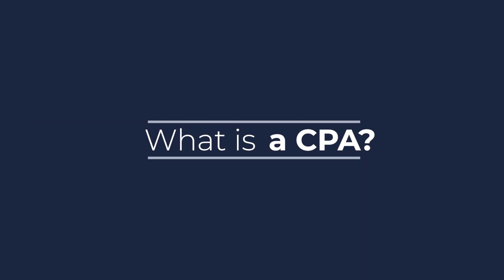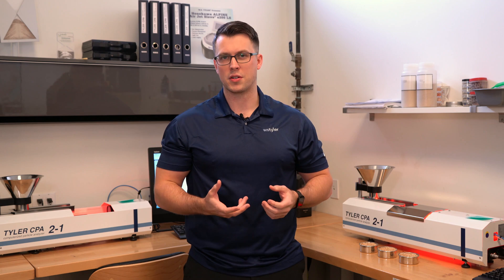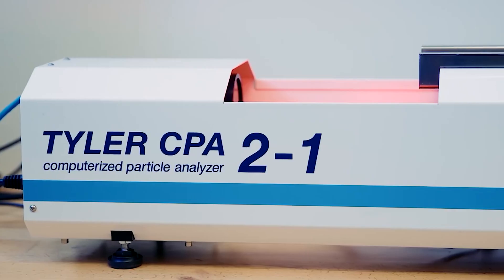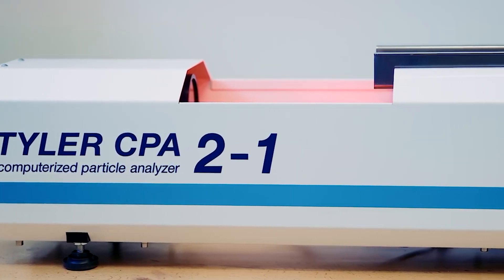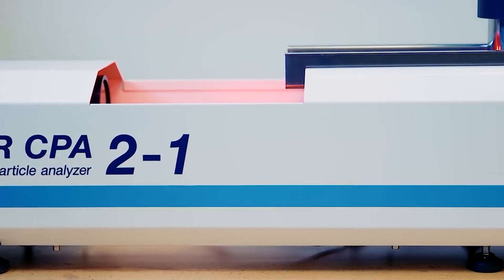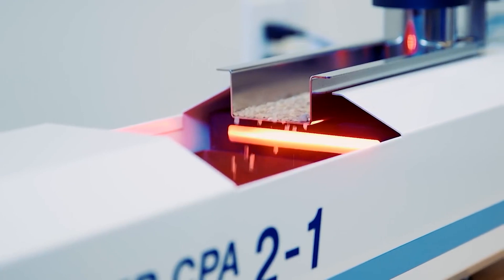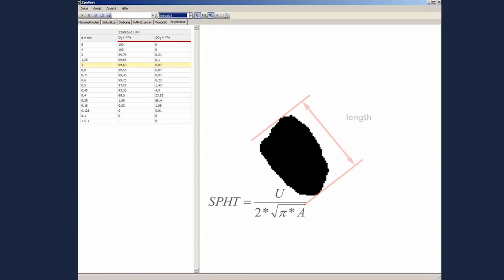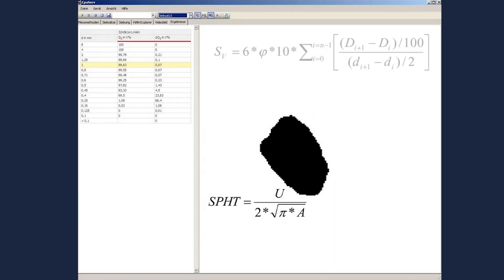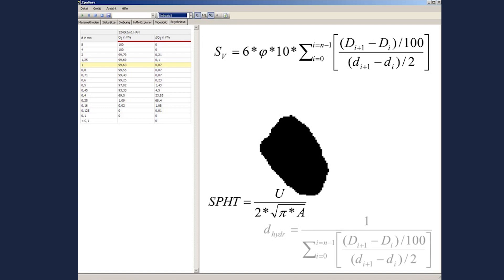What is a CPA? A CPA is an alternative to traditional test sieving. It's a photo-optical image analyzer that utilizes a line-scan camera and an LED backlight. You drop material between the LED and the line-scan camera, and it'll cast a shadow projection, which is captured by the camera. That camera and that shadow projection will give you the size and shape of your particles.